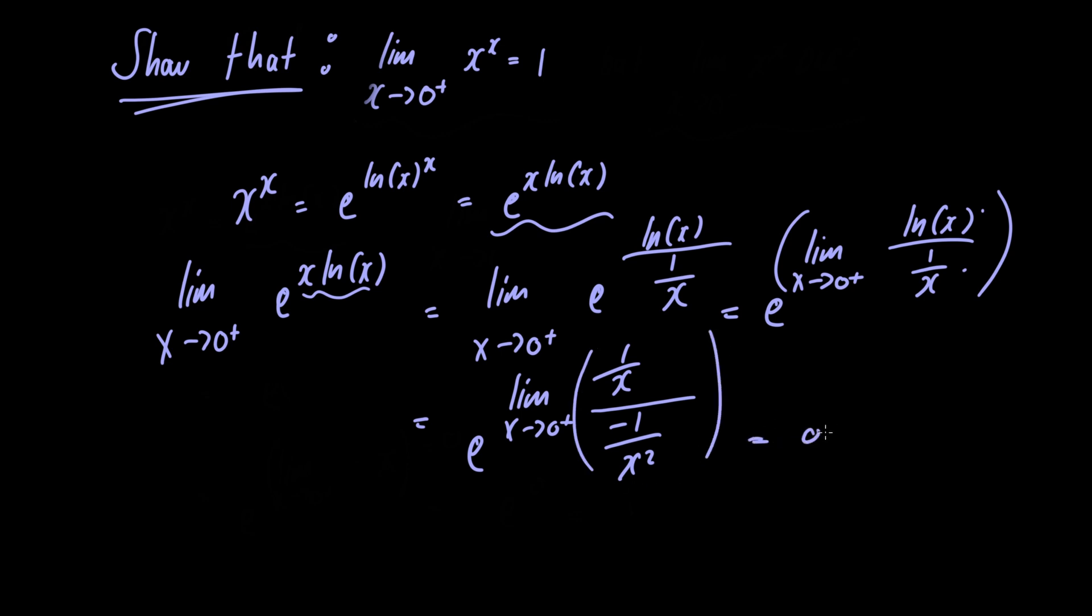This simplifies to e raised to the limit as x approaches 0 from the right of minus x. This clearly just equals 0, so we have e raised to 0, which is equal to 1.